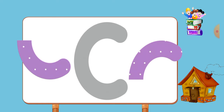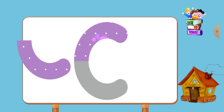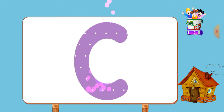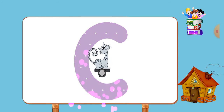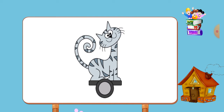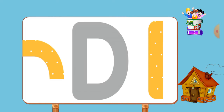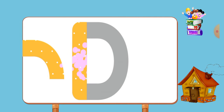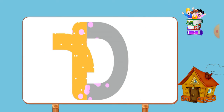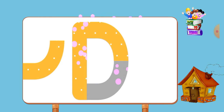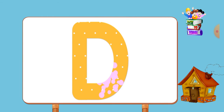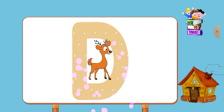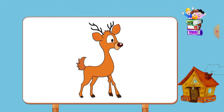Match the pictures to their shadows. C, c, cat. Match the pictures to their shadows. D, d, deer.